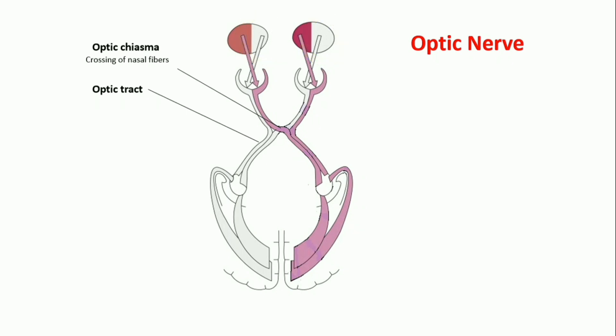Most of the fibers of optic tract synapse in the lateral geniculate body. A few fibers pass without synapsing to superior colliculus and pretectal area and are responsible for light reflex.